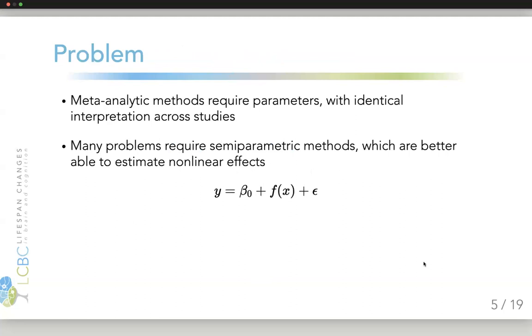A problem with this is that meta-analytic methods require parameters, and those parameters should be quite identical in their interpretation across studies. However, many problems require semi-parametric methods, which are better able to estimate non-linear effects.